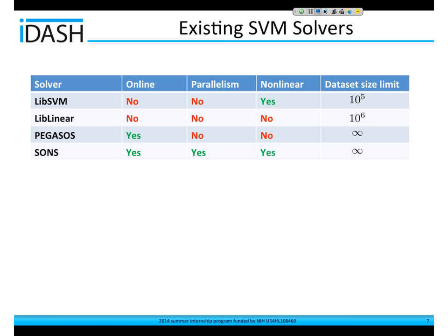Looking at existing SVM solvers, these are three state-of-the-art solvers shown by their characteristics. LibSVM is the most famous — it's not online, not good for parallelism, but can train non-linear decision functions and handles data sets up to 100,000 samples. LibLinear is the linear version of LibSVM, good for up to 1 million samples. Pegasus is an online learning solver but is also linear.